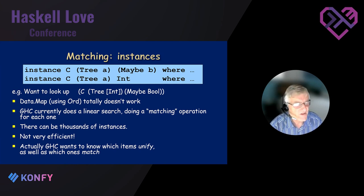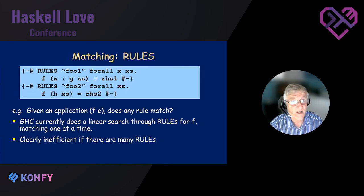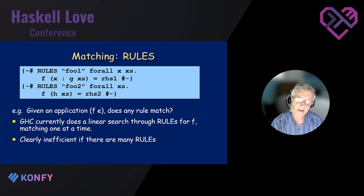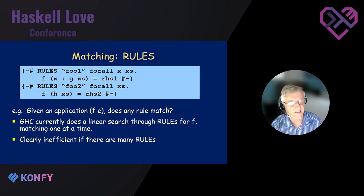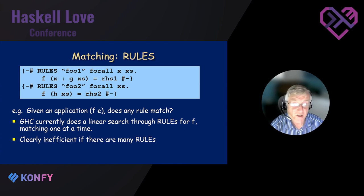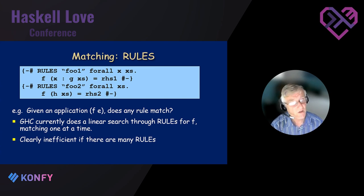Similarly, GHC rewrite rules use a RULES pragma where you write a left-hand side and right-hand side, and GHC rewrites any occurrence of the left-hand side during compilation. GHC currently does a linear search through the rules one at a time, which is not good if there are lots of rules. So in two different ways we're doing this sort of matching lookup.